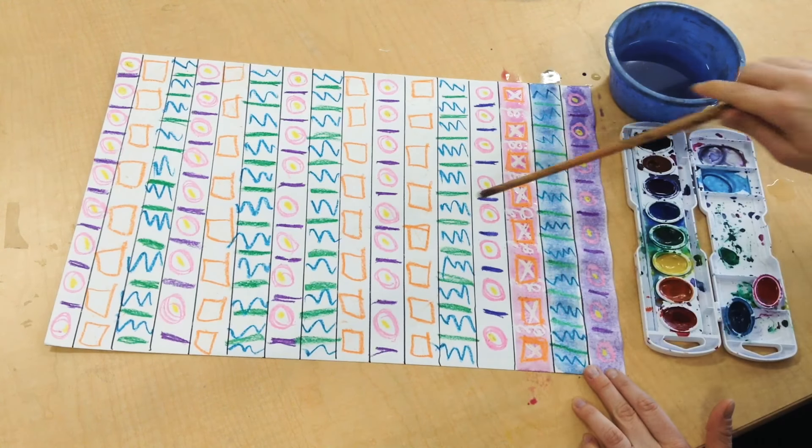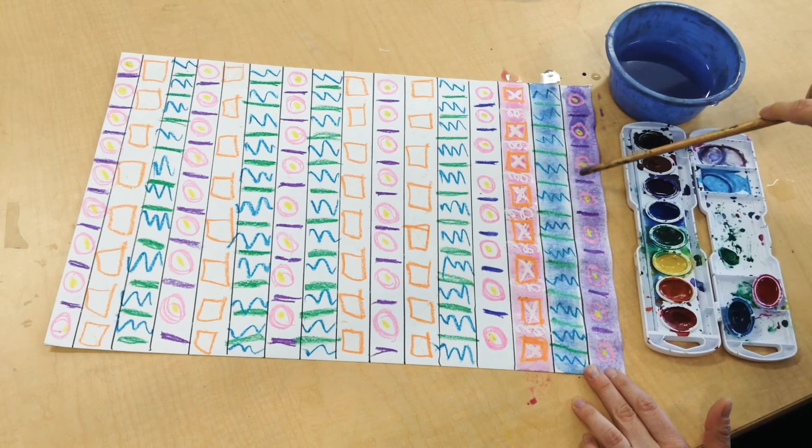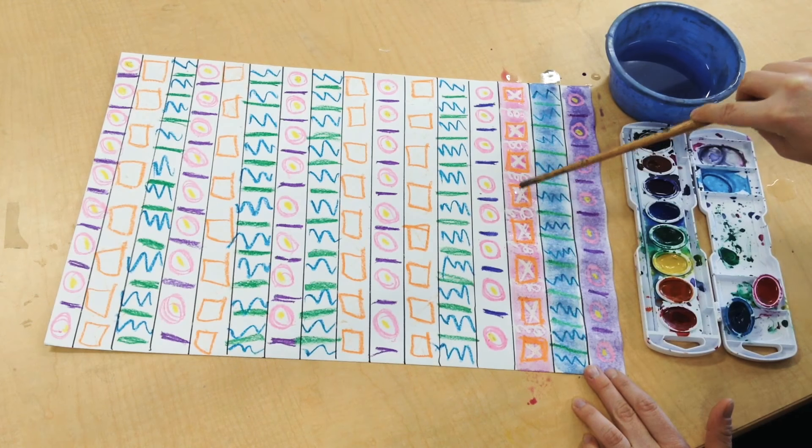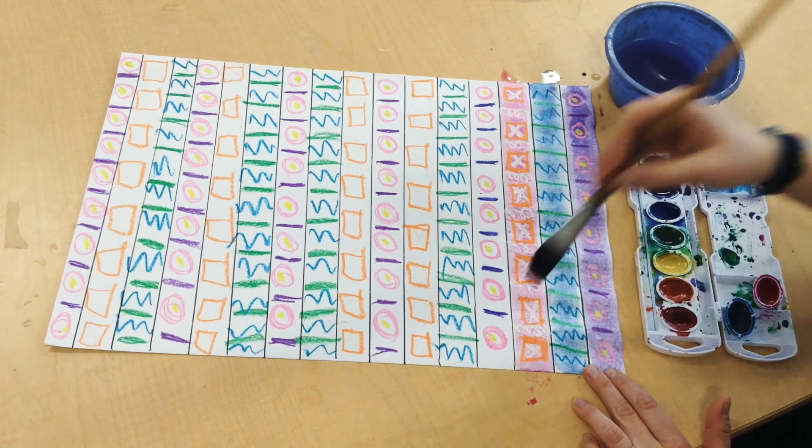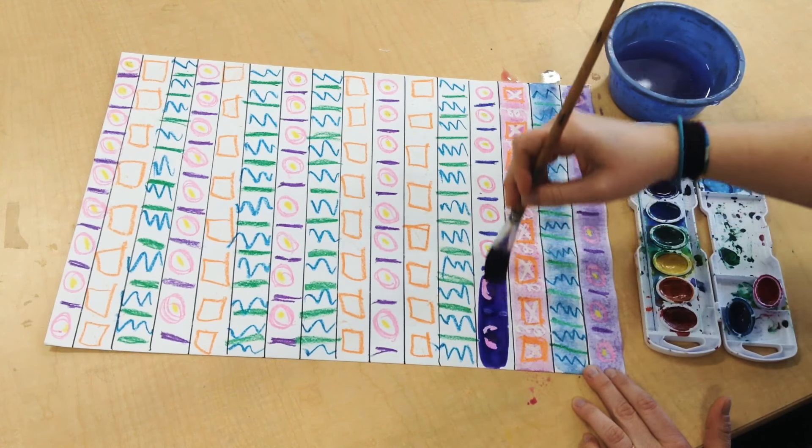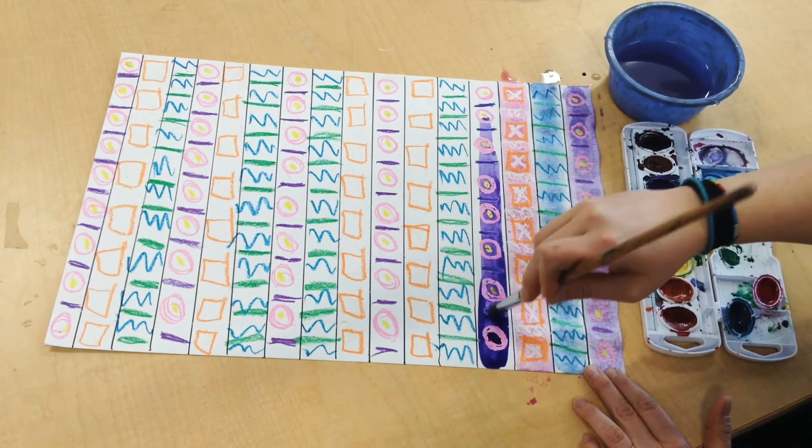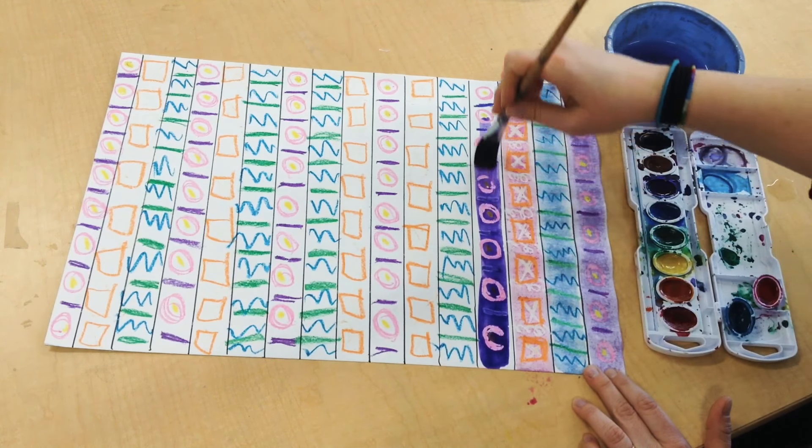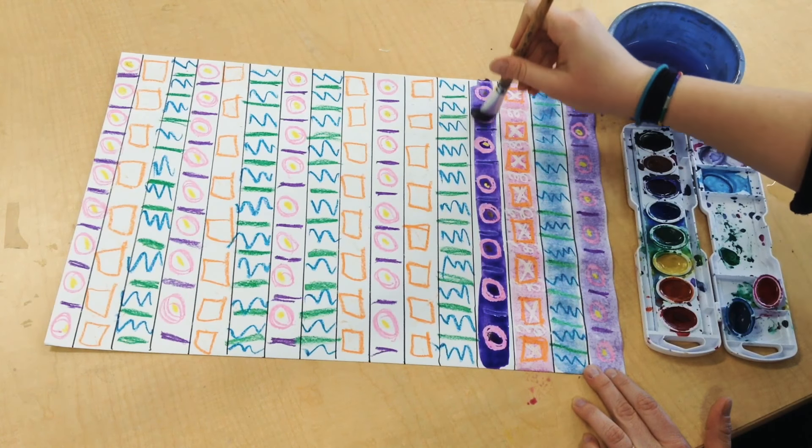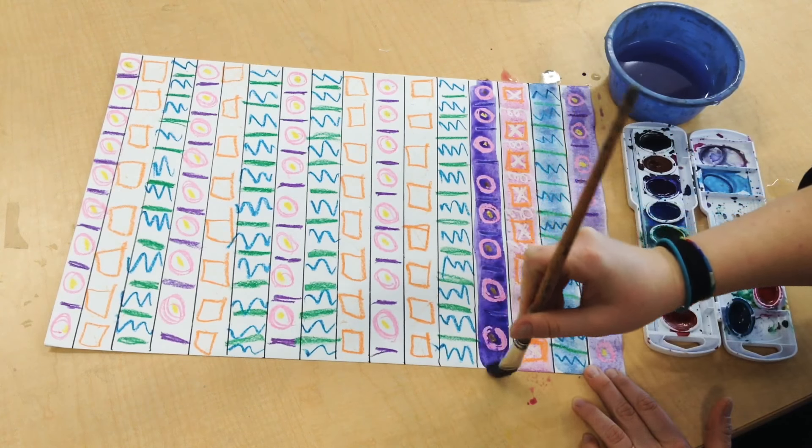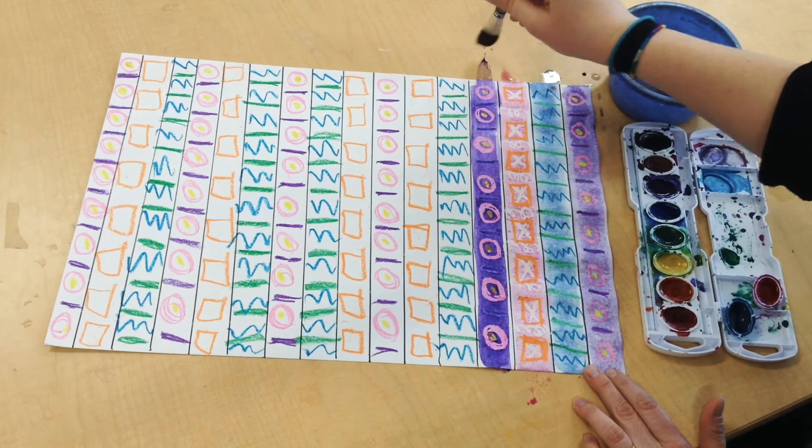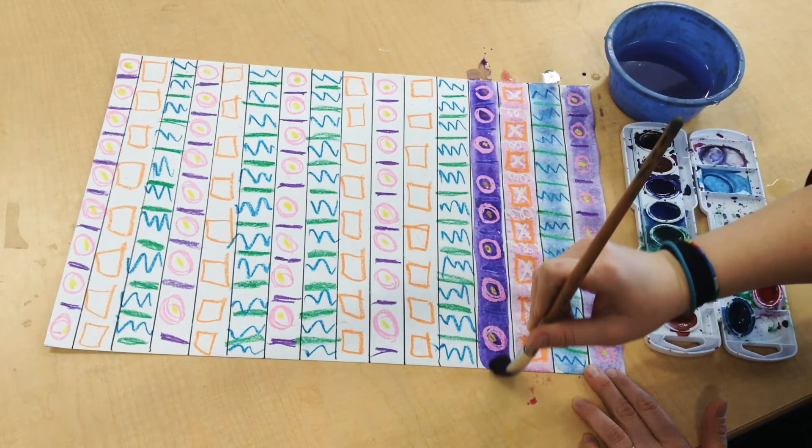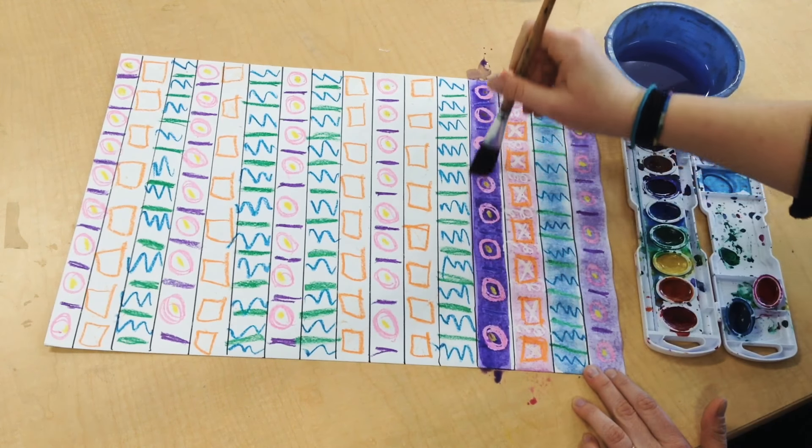So again, I'm doing an A, B, C pattern. My pattern is purple, blue, pink, which means I'm going to have to start with purple here. Again, I'm keeping my brush nice and wet. That's going to help my resist show up really well. And I'm doing my best to stay off my lines. That way my colors don't bleed together and I can see that beautiful pattern.